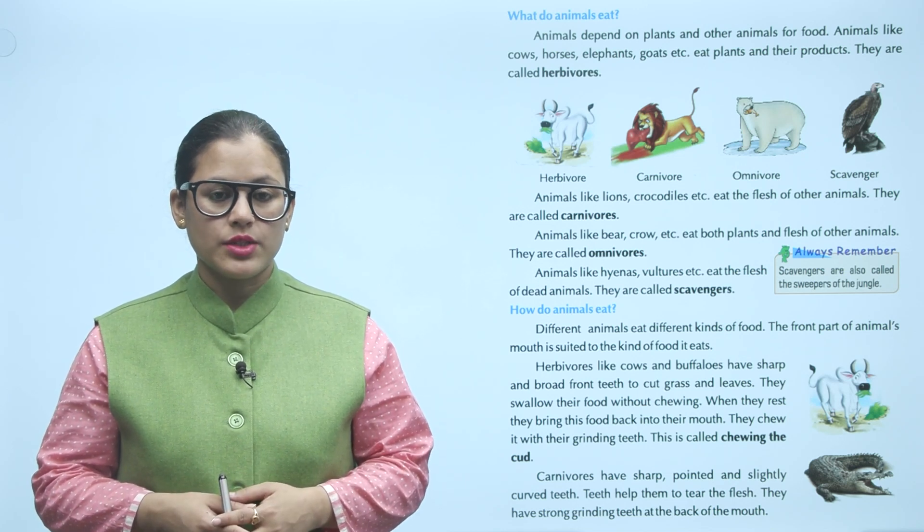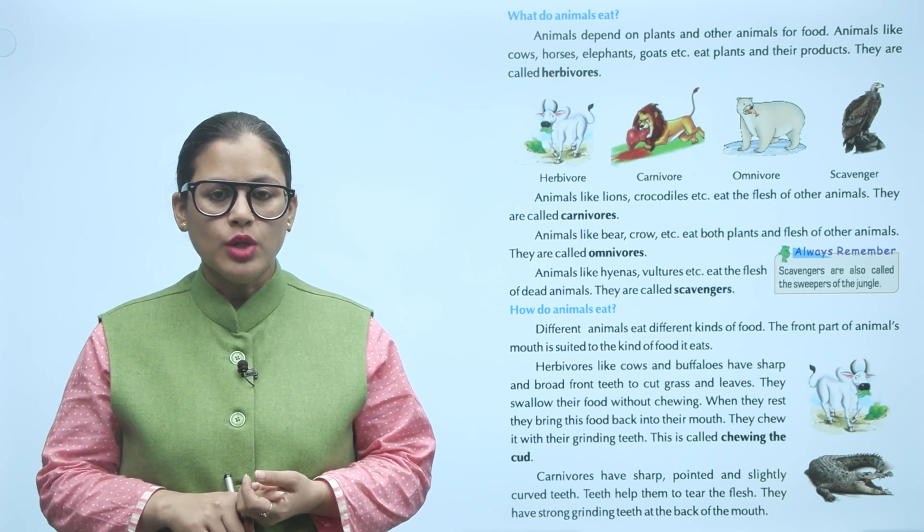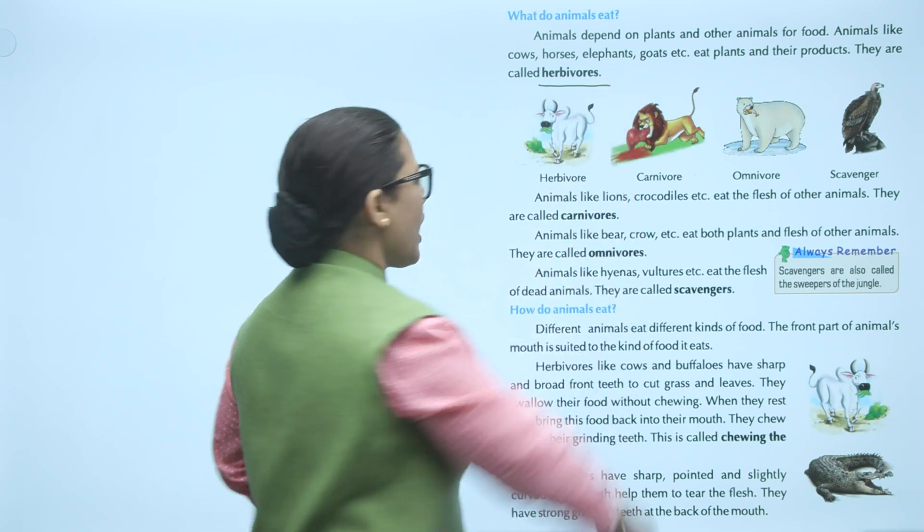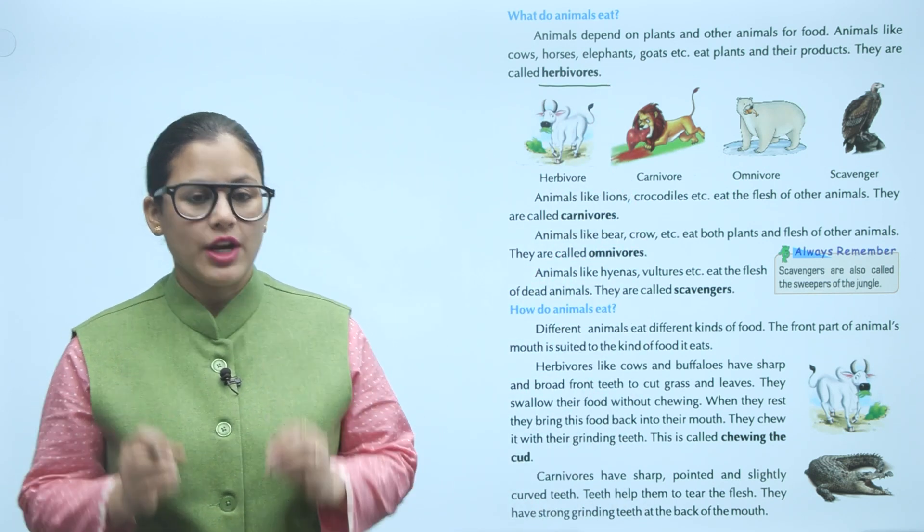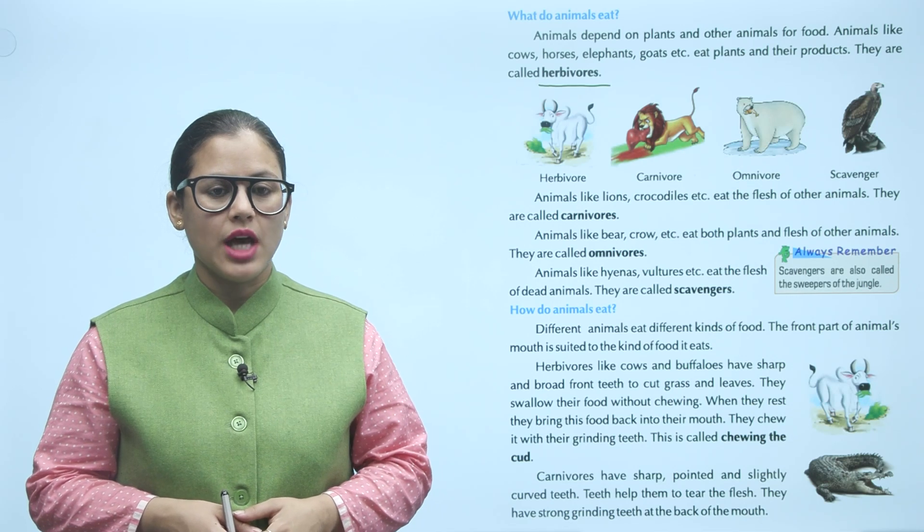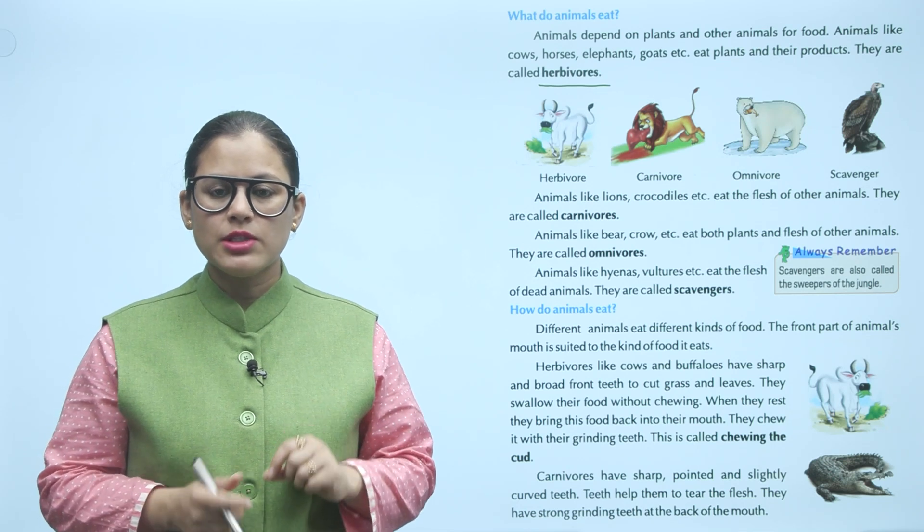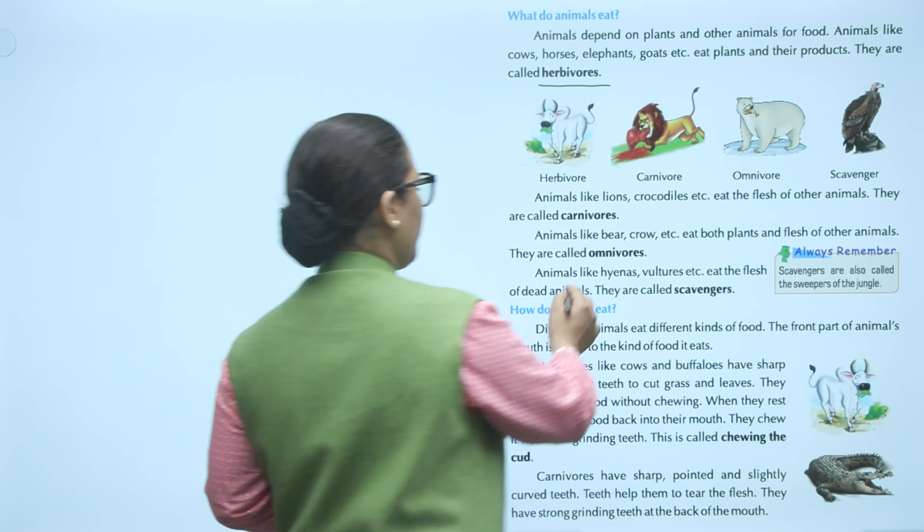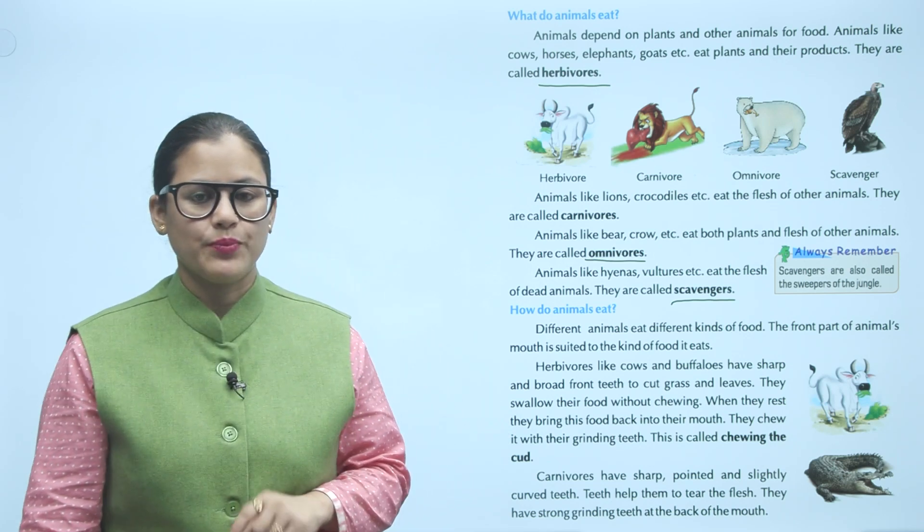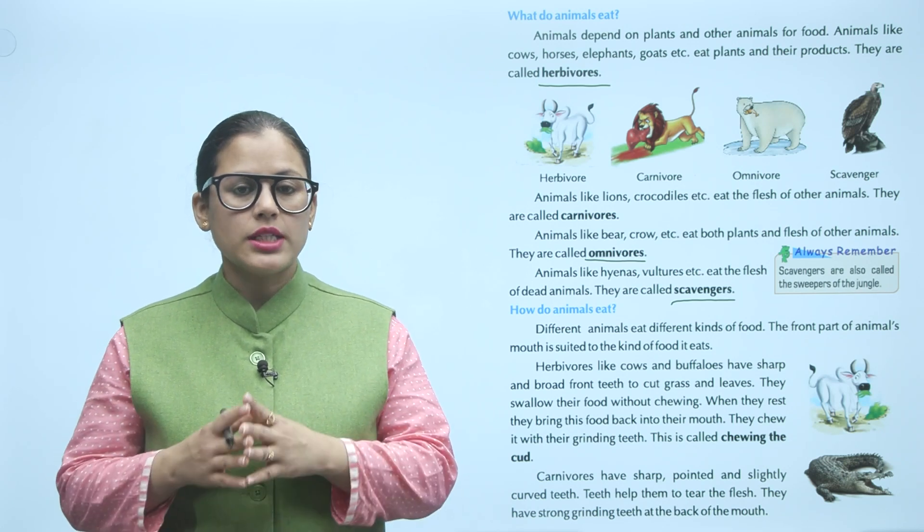Animals like lions, crocodiles etc eat the flesh of other animals. They are called carnivores. There are such animals that eat plant products and flesh of other animals. We call them omnivores. And those animals that eat dead animals, we call them scavengers. Always remember scavengers are also called the sweepers of the jungle. Scavengers can also call the jungle sweeper as well as they eat dead animals.